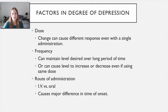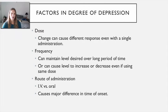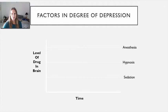The fastest way to get the drug in and produce the greatest degree of depression is IV administration. Oral administration takes longer for the drug to become effective and also longer for the drug to be eliminated in some cases. So the time of onset is really what route of administration is all about.